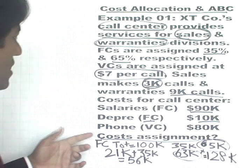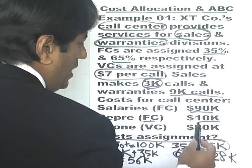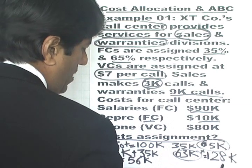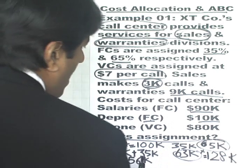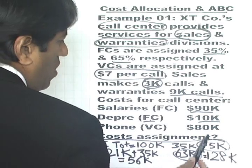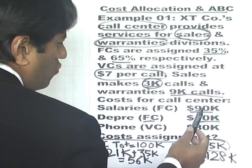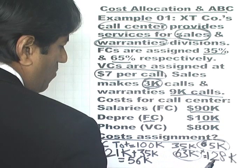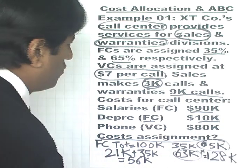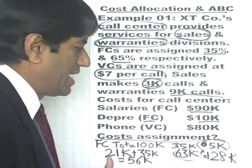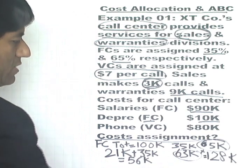Note that if you add up the costs assigned — $128K for warranties and $56K for sales — that adds up to $184,000. Whereas the actual costs of the call center add up to $180,000, so they don't exactly match. But this is how you assign the costs.